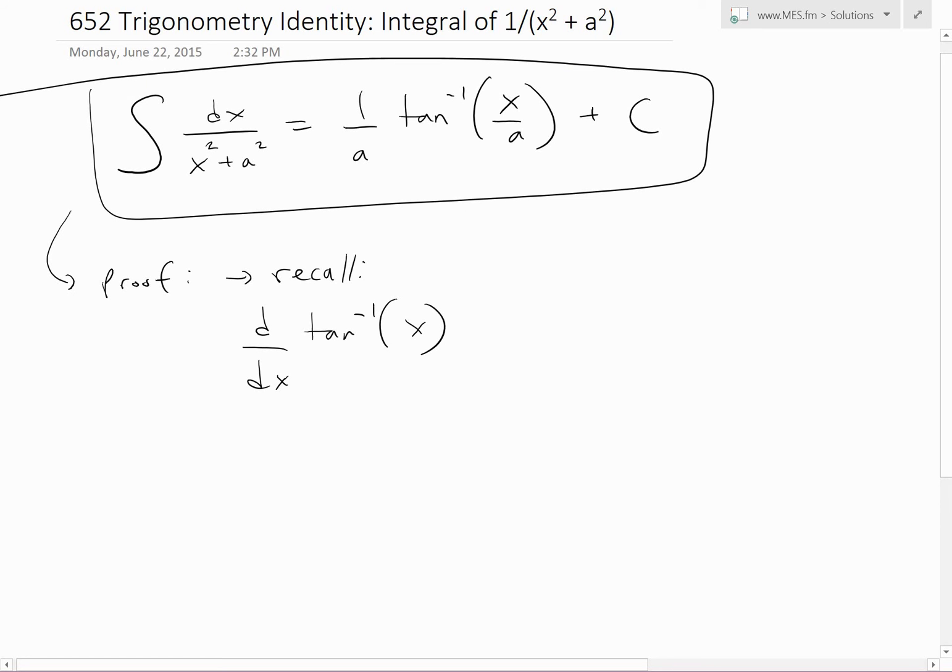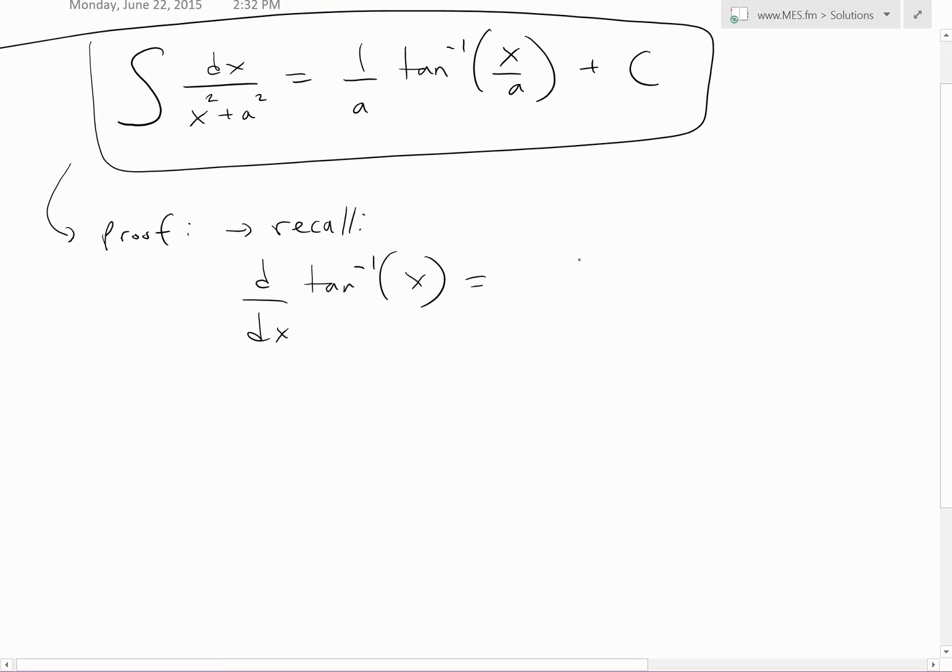I showed that the derivative of the inverse tan of x equals 1 over x squared plus 1. This a is just a constant.